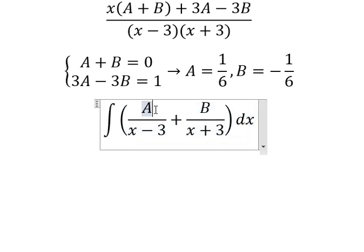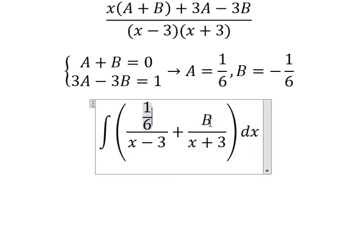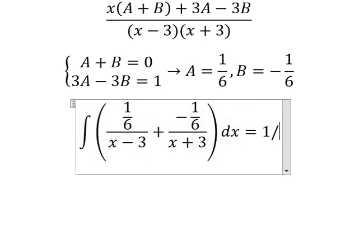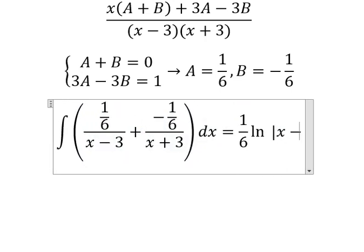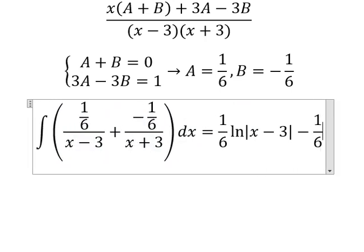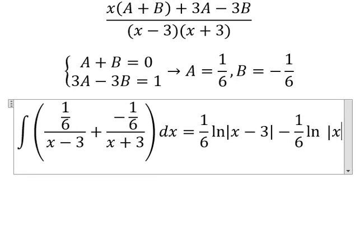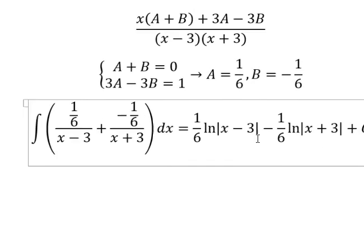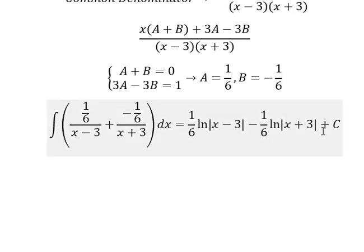So A equals to one over six, B equals to negative one over six, and now we have the final answer. So this is the final answer. That is the end, thank you for watching.